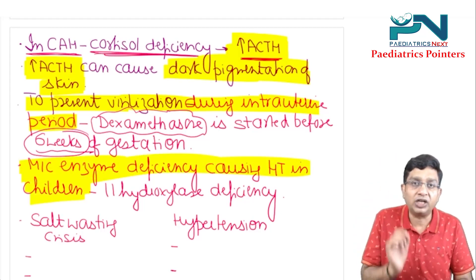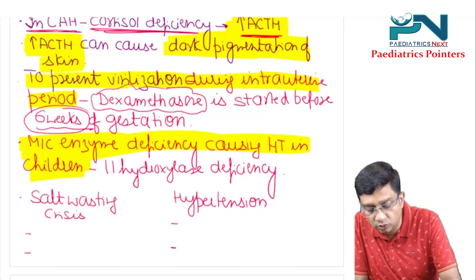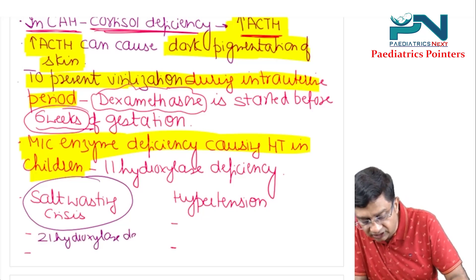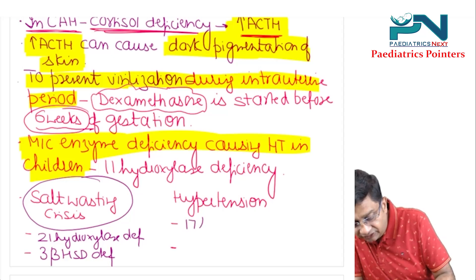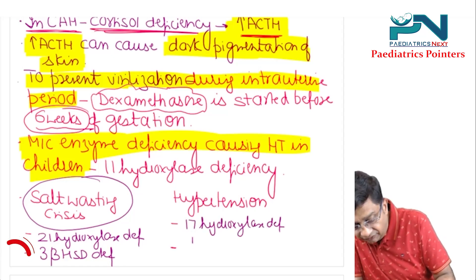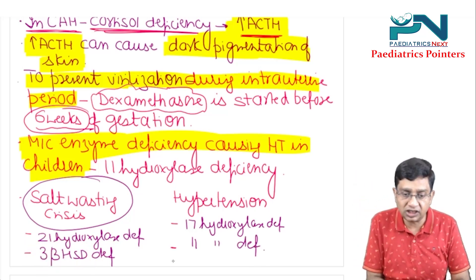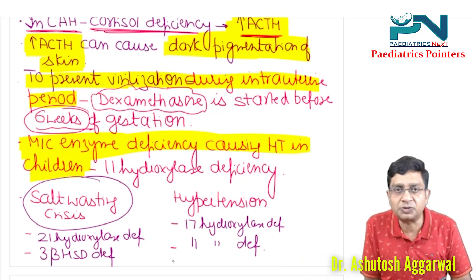In summary, in two enzyme deficiencies there is salt wasting crisis: 21-hydroxylase deficiency and 3-beta HSD deficiency. In two there is hypertension: 17-hydroxylase deficiency and 11-hydroxylase deficiency. This concludes the topic of congenital adrenal hyperplasia. If you are liking the revision series, do like and subscribe to the channel. Keep studying, thanks.